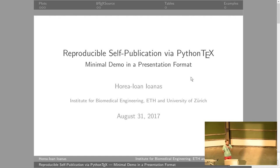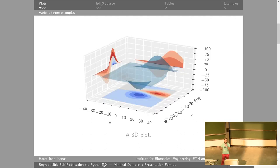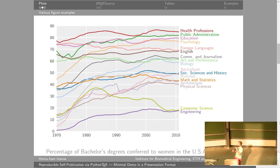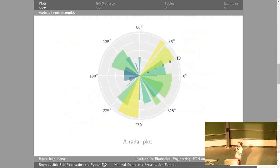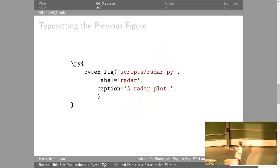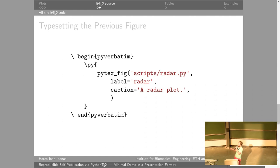Ideally you can put the figures from your Python scripts directly into your document. This is a LaTeX document — this is not a bitmap anywhere. This is generated directly from Python code, as is this, as is this. The code for this looks very simple in the LaTeX document. You have a small wrapper, and then you call a function which has the location of the script, a label if you want to link to the figure, and also a caption. All of these places support LaTeX tags.